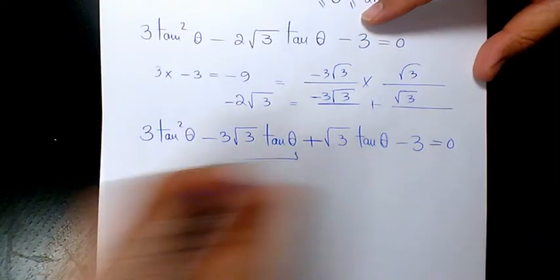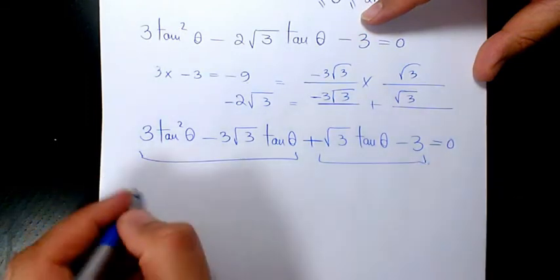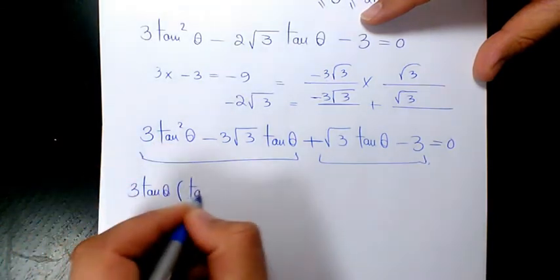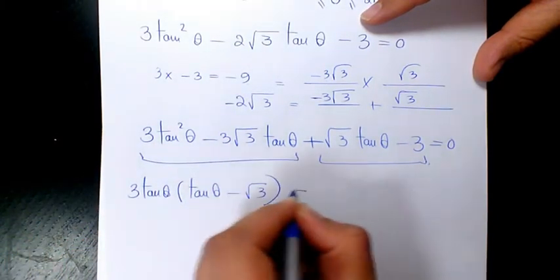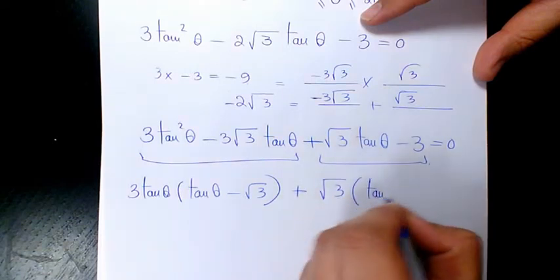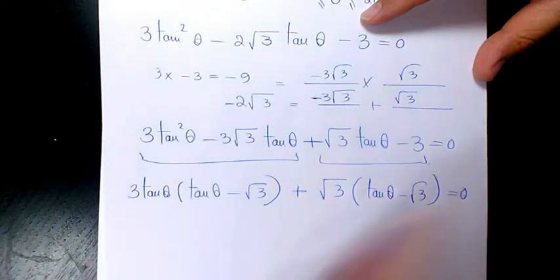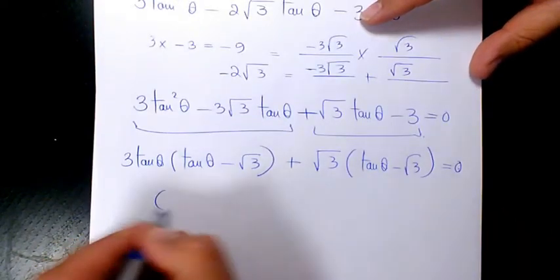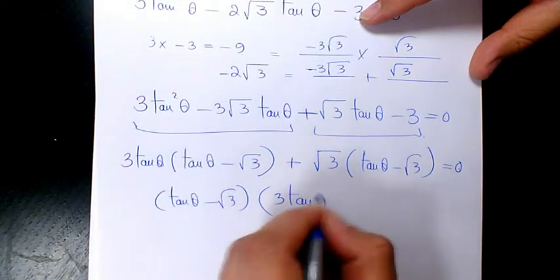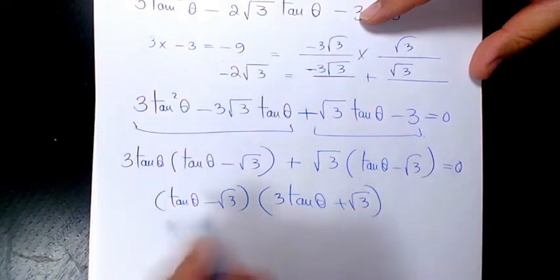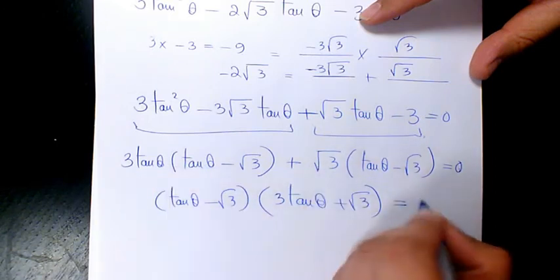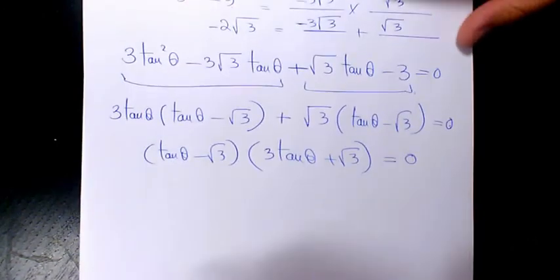Then I'll use group factoring. Factor three tan theta from the first group to get three tan theta times (tan theta minus root three), plus root three times (tan theta minus root three). Then factor out (tan theta minus root three) to get (tan theta minus root three)(three tan theta plus root three) equals zero.